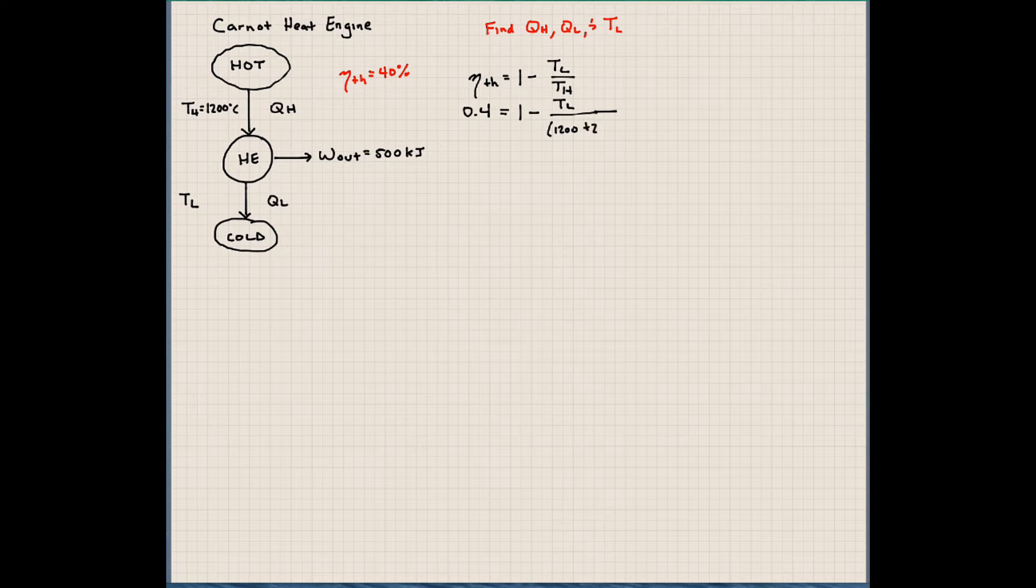Remember, we have to use the thermodynamic temperature scale, which is in this case just Kelvin. Not degrees Kelvin, just Kelvin. So the low temperature source, we will calculate to be at a temperature of 883 Kelvin. And that's just using our definition of thermal efficiency for a Carnot heat engine. That's where we're starting.